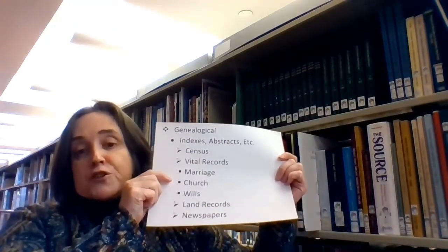1950 will be opened in about two years, which will be very exciting. So we look for the census and then for vital records. While we usually access the census today through products such as Ancestry, FamilySearch, or Heritage Quest, there are occasionally indexes and abstracts and transcriptions of a particular census that are particularly important.